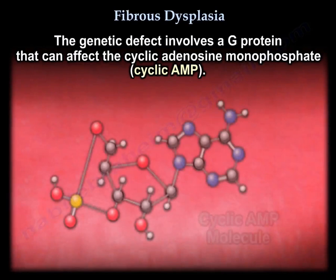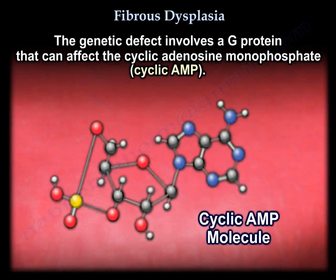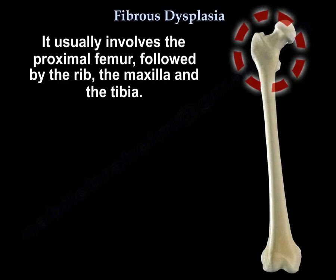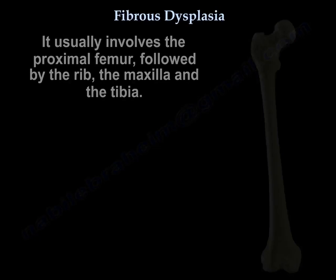The genetic defect involves a G-protein that can affect the cyclic AMP. It usually involves the proximal femur, followed by the rib, the maxilla, and the tibia.